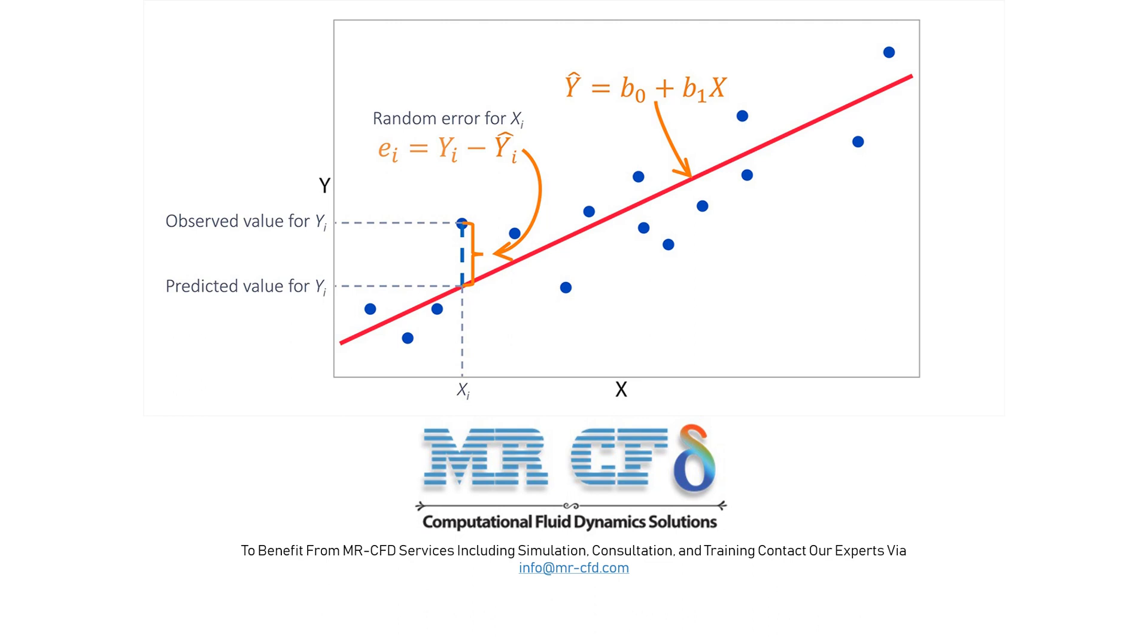In this way, we write the previous equation for the error value epsilon according to the output parameter Y and the input parameter X, then we bring it to the power of 2 and write its derivative according to the coefficients of the equation. After the necessary mathematics, a suitable equation with appropriate estimation coefficients with the least possible error is achieved.